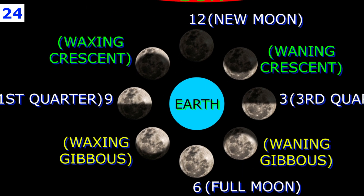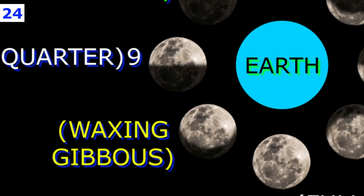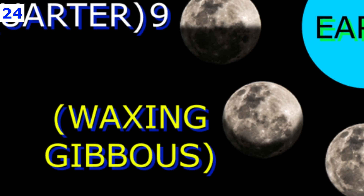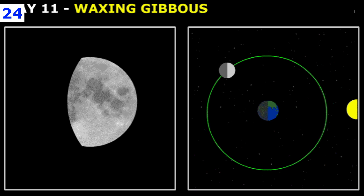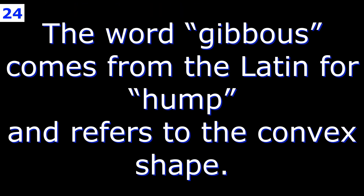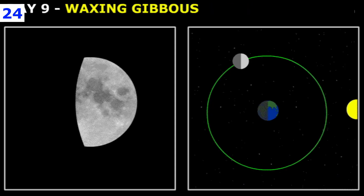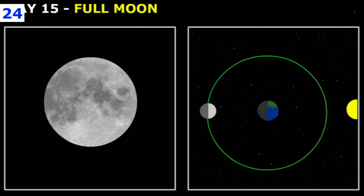During the waxing gibbous moon phase, the right side of the moon is illuminated more than halfway. The illuminated portion of the moon is still waxing, or increasing. The word gibbous, derived from the Latin word for hump, refers to the convex shape. Over about a week's time, this phase marks the progression from the first quarter moon to a full moon.